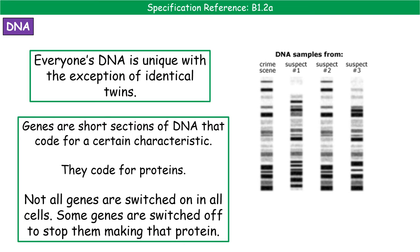For example, in a white blood cell, the genes needed to make antibodies would be switched on. But in your skin cells, they will be switched off. So different cells have different genes switched on or off.